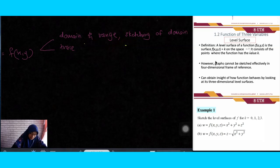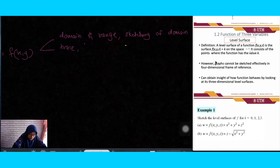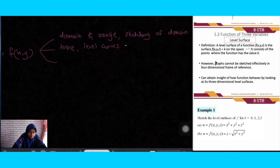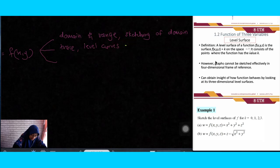For sketching the graph of a two-variable function, you need traces. For a three-variable function you can also use level curves to sketch the graph. The shape of the surface depends on the type of equation: if you have a linear equation, you get a flat plane.